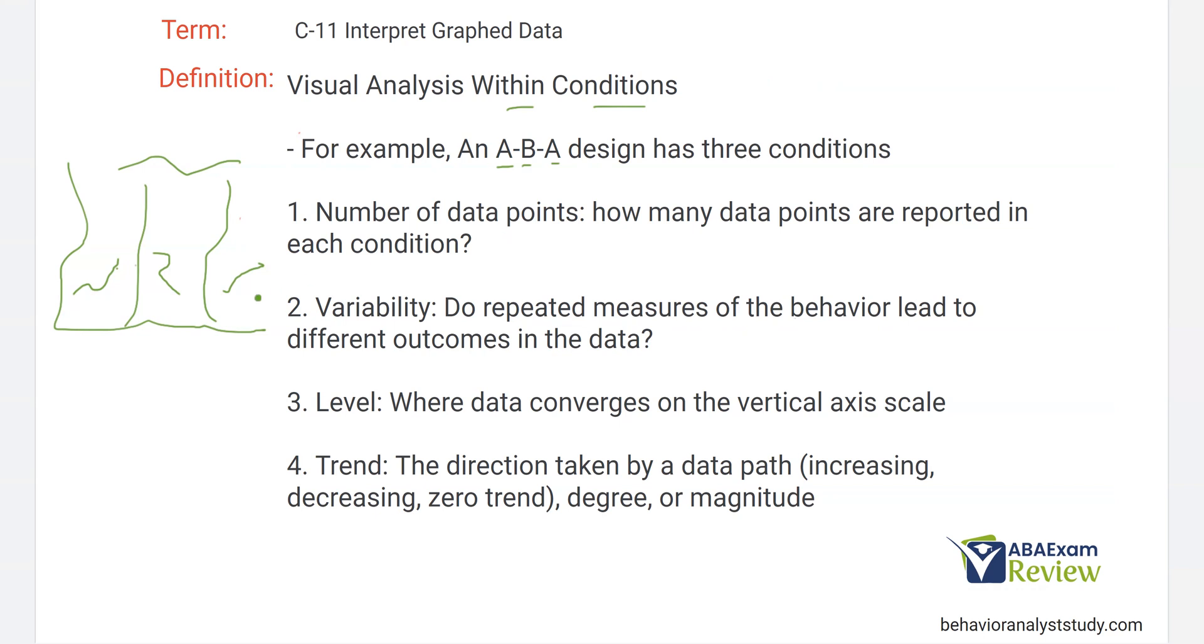If you see a baseline with one data point, you really need to ask, well, why did you only run baseline one time? Then we have to ask ourselves, what about the variability? Do repeated measures of the behavior lead to different outcomes? What about level? That's where the data converges on the vertical axis scale. This is usually interpreted through a mean analysis or a median analysis. And then trend. What direction is the data path taking? So let's look at each one of those individually.